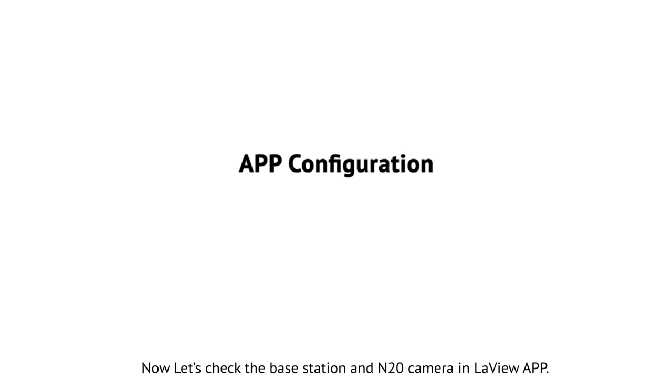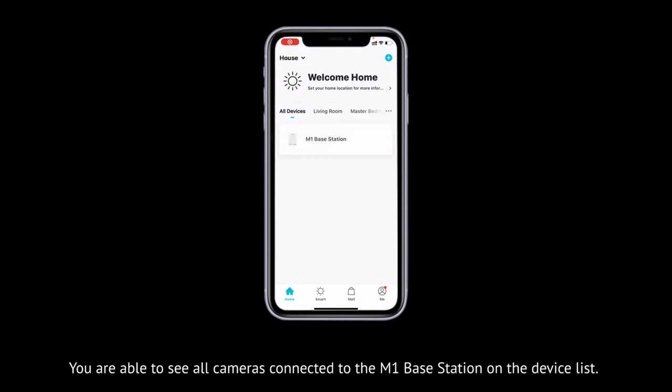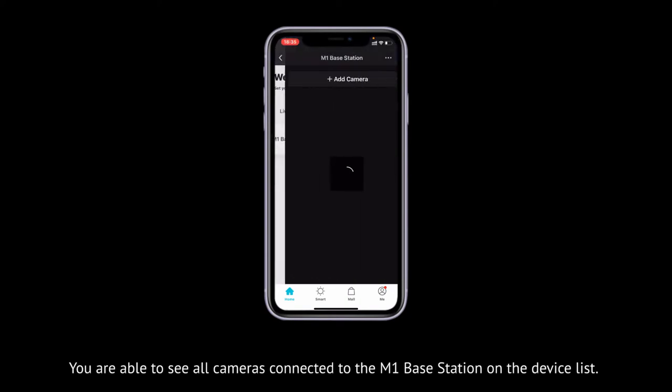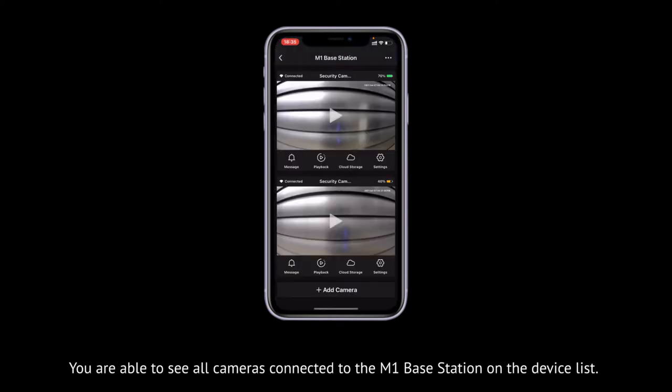Now let's check the Base Station and N20 camera in the View app. You are able to see all cameras connected to the M1 Base Station on the device list.